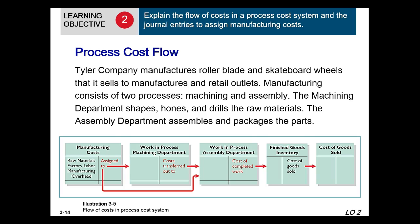Now let's look at the process cost flow. Tyler Manufacturing Company has roller blade and skateboard wheels that it sells to manufacturers and retail outlets. Manufacturing consists of two processes: machining and assembly. The machining department shapes, hones, and drills the raw materials, and then the assembly department assembles and packages the parts. Various manufacturing costs can be assigned to either the work in process machining department or the work in process assembly department.